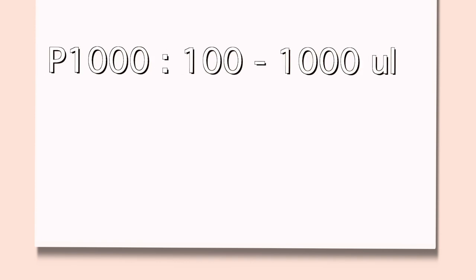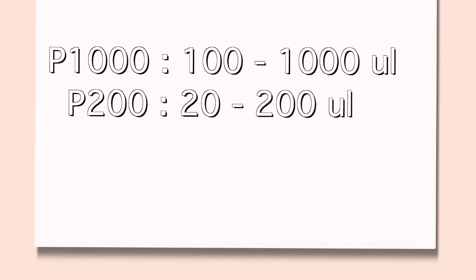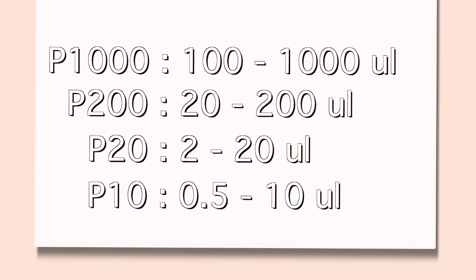For the P1000, the range of liquid volumes is between 100 and 1,000 microliters. For the P200, the range is between 20 and 200 microliters. For the P20, the ideal range is between 2 and 20 microliters, while the P10's range is between 0.5 and 10 microliters.